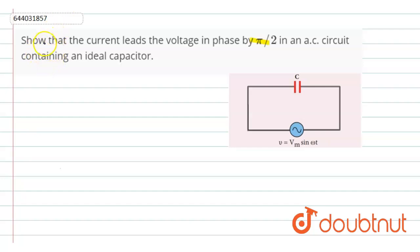In this video, we are going to solve this question: Show that the current leads the voltage in phase by π/2 in an AC circuit containing an ideal capacitor. Let us consider that this is a capacitor which is connected to an AC source in which v equals vm sin ωt.